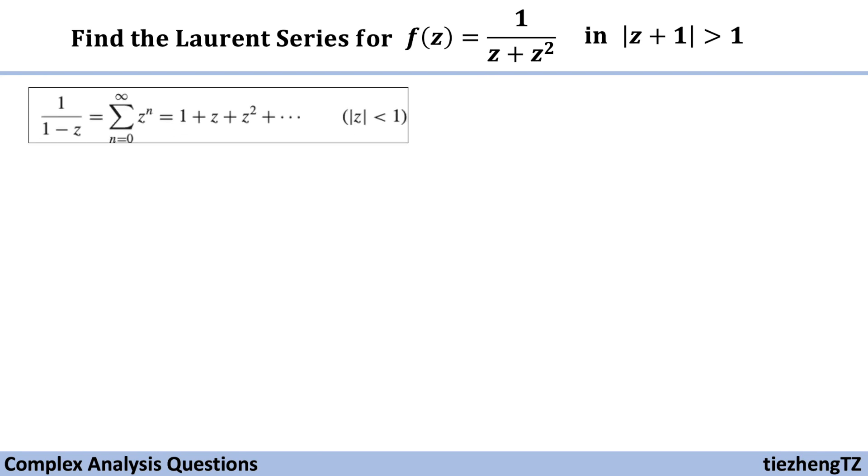First, since we have the denominator and numerator parts, we know we are still going to use this Laurent series format in this given image. Next, in order to make this given domain to some format which can show z modulus is less than 1, let's divide both sides by z plus 1 modulus.